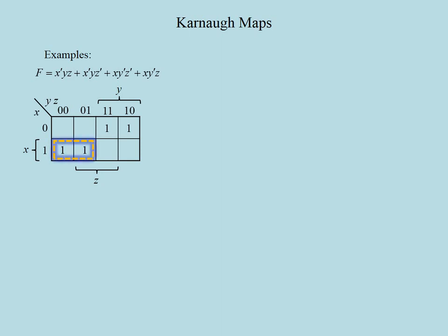We see two adjacent pairs in this map. These two squares occupy the x row and the y prime columns. The literals of z are different in them, so we can simplify them to the term x·y prime. Similarly, the other pair of adjacent cells are in the x prime row and y columns, again having their z literals different. They can be reduced to x prime·y. Once you put down your Carnot map, obtaining a simplified form of the function is as easy as checking the common literals in the adjacent cells.